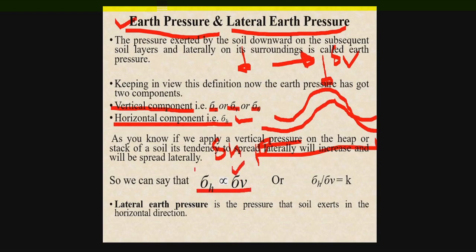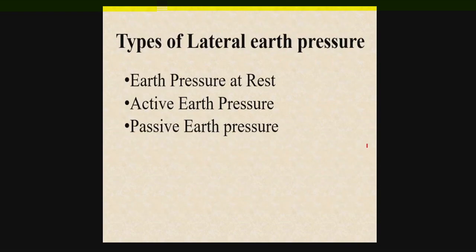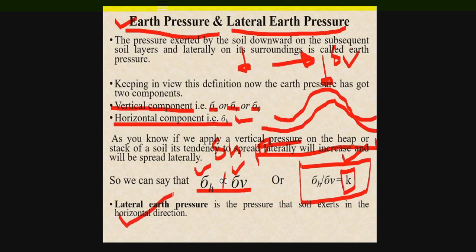We can say that sigma_h is directly proportional to sigma_v — the higher the value of sigma_v, the higher will be sigma_h. Replacing the proportionality sign with a constant of proportionality, we get sigma_h divided by sigma_v equals K, which is known as the coefficient of earth pressure. The pressure exerted by the soil in the horizontal direction is known as the lateral earth pressure. Based on this K value, there will be different cases: earth pressure at rest, active earth pressure, and passive earth pressure.